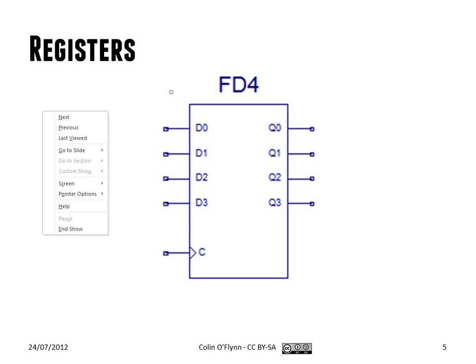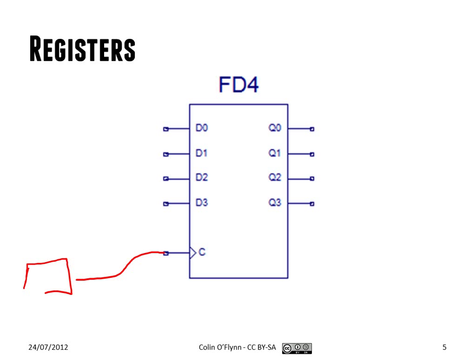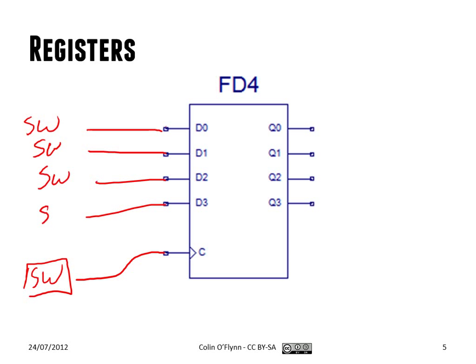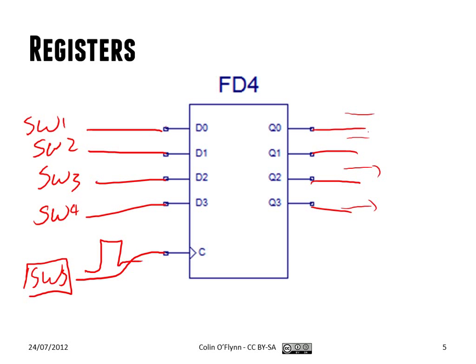When playing with registers, you can place them down as a block really easily. I showed an example with the board. If you place this one down in the ISE software, you could connect the clock to one of the switches and connect D0, D1, D2 to switches as well. Then you can set the input switches as you wish, and only once you pulse the clock switch do the outputs all get updated at once, avoiding the problem of intermediate values.